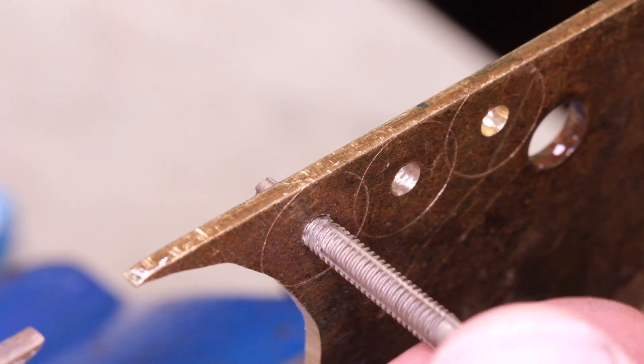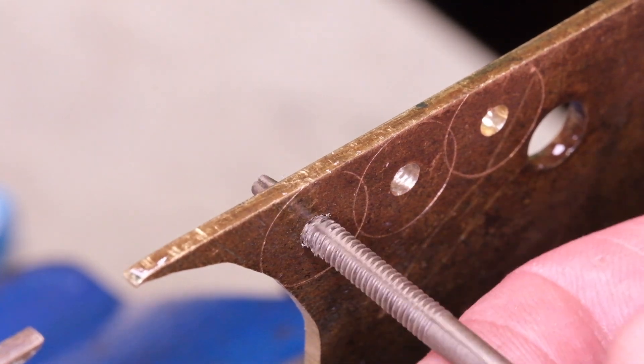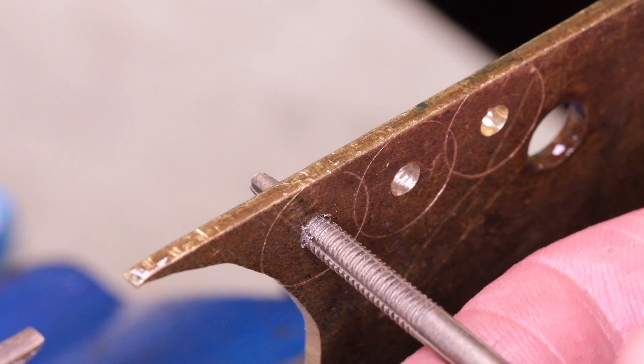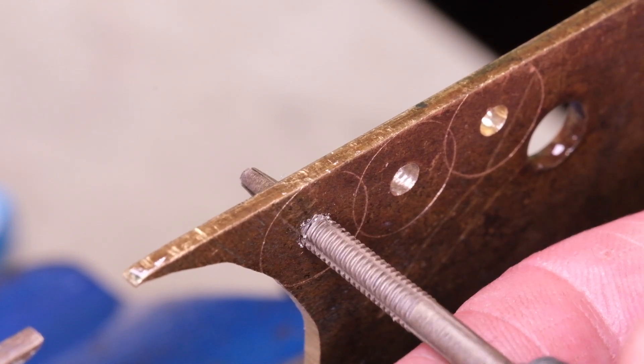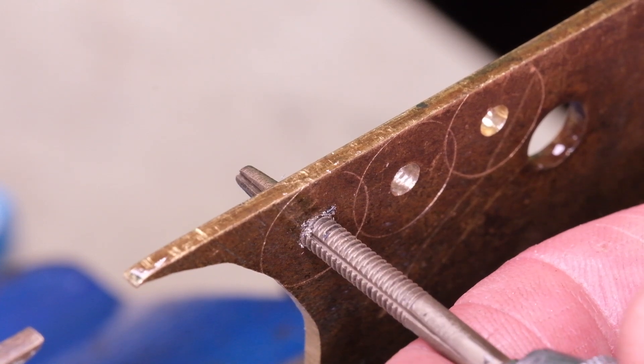What I did next was to drill some slightly smaller, a range of smaller holes until I found one that I felt was as small as I could get away with without the tap breaking.